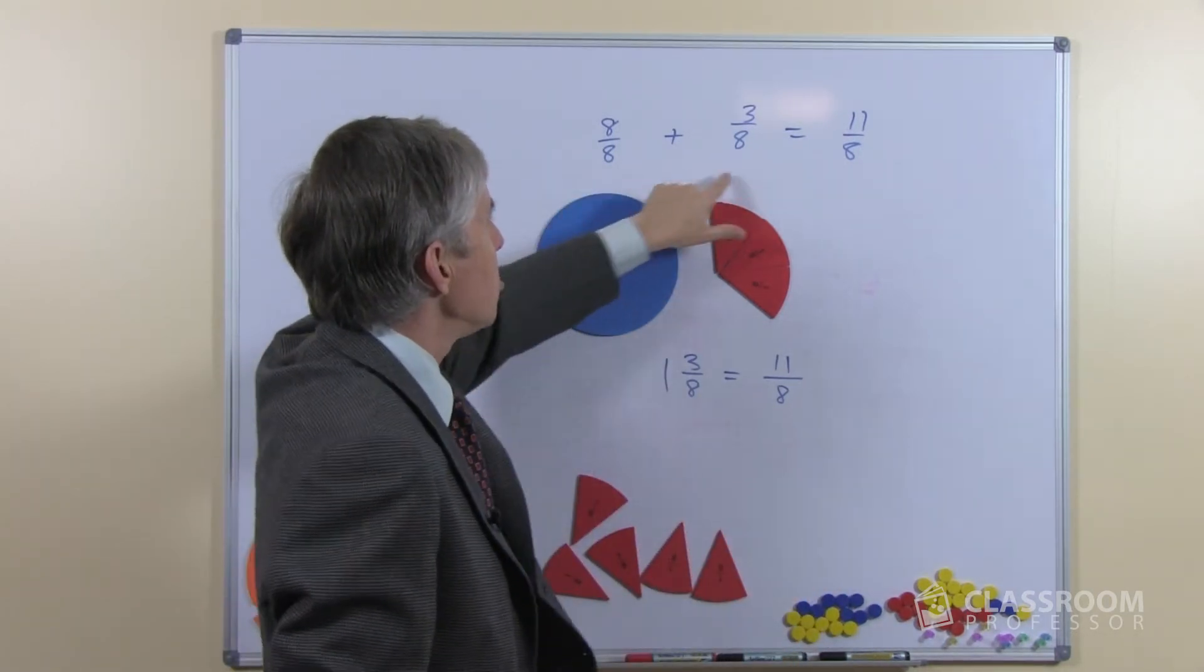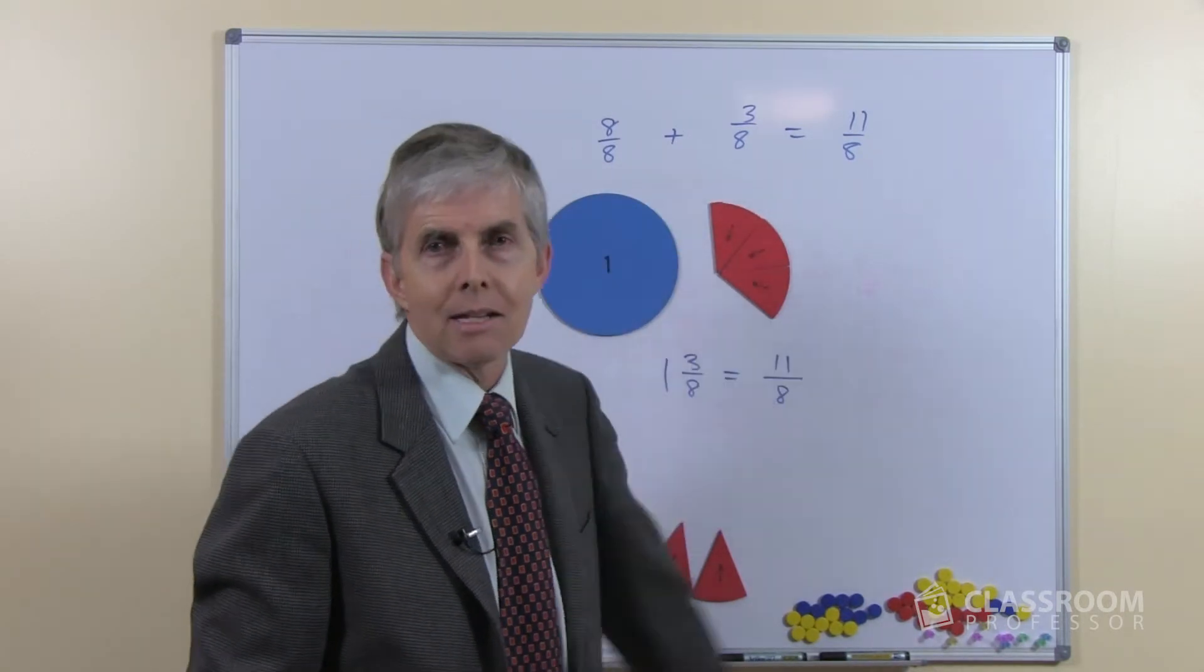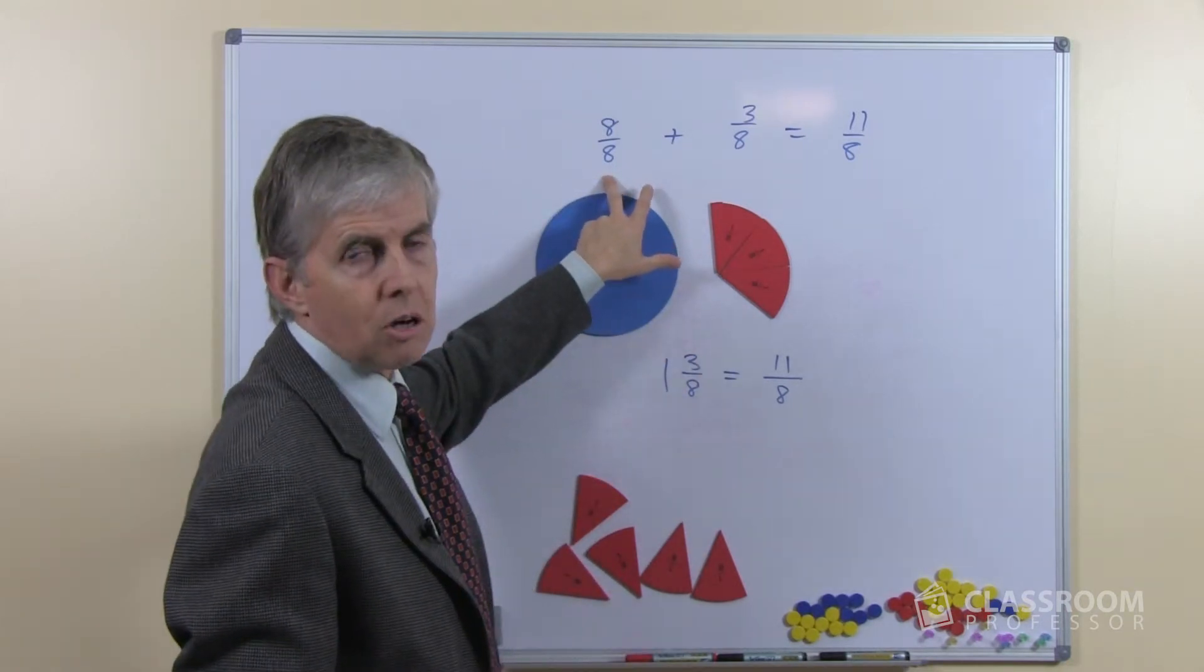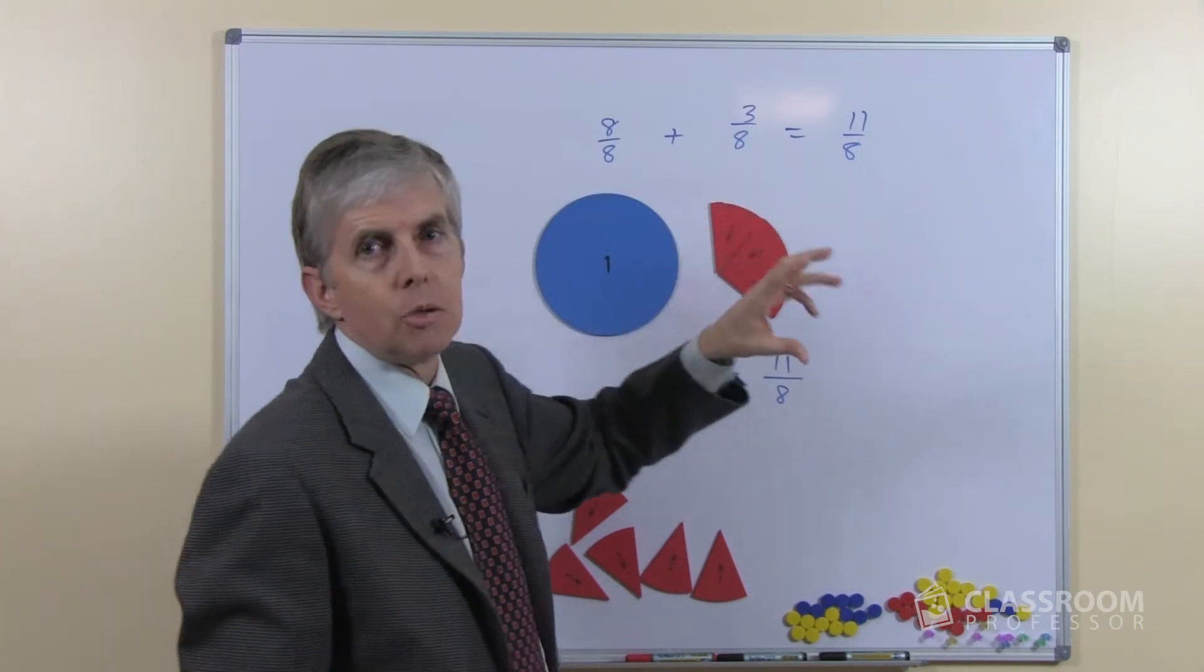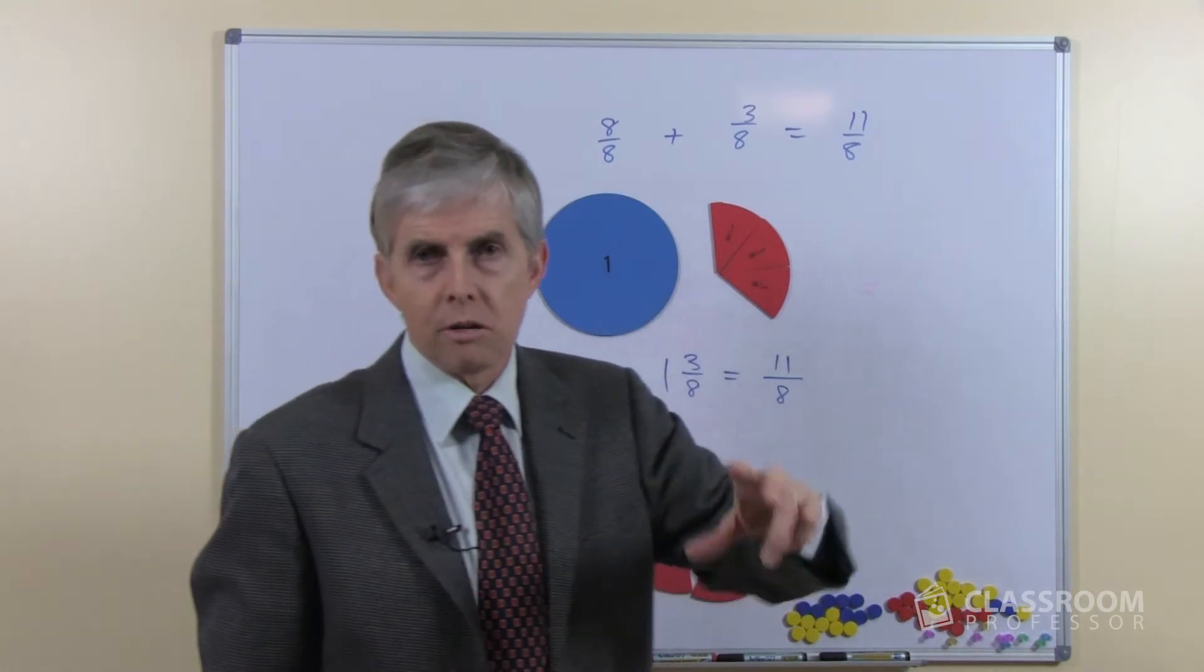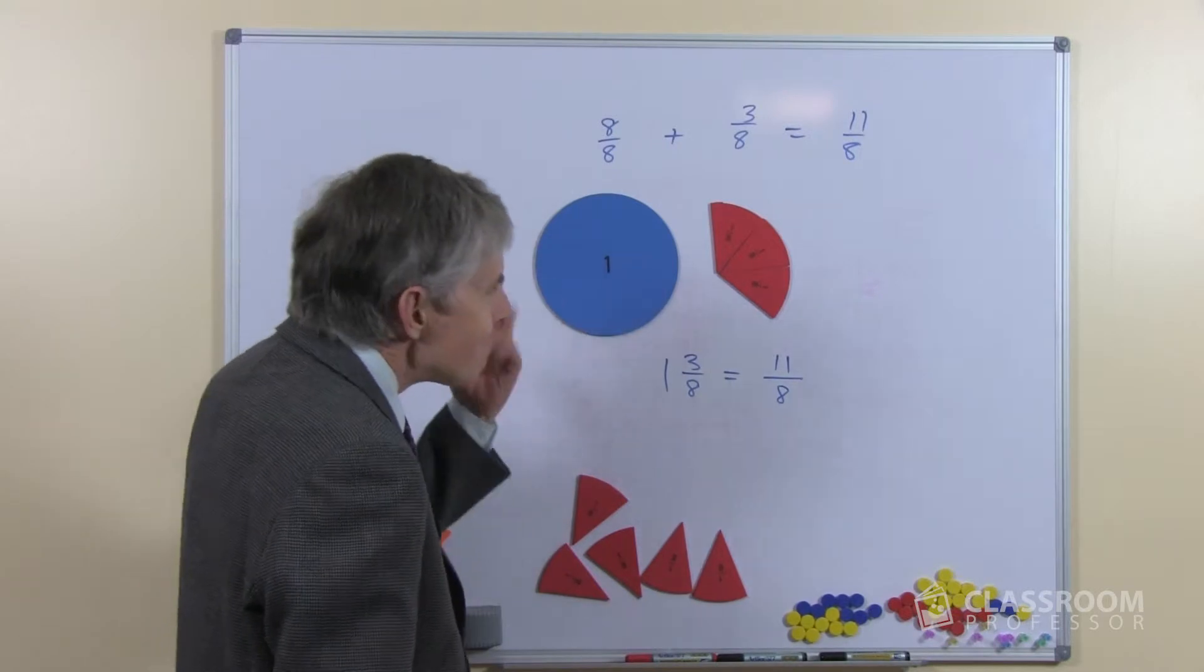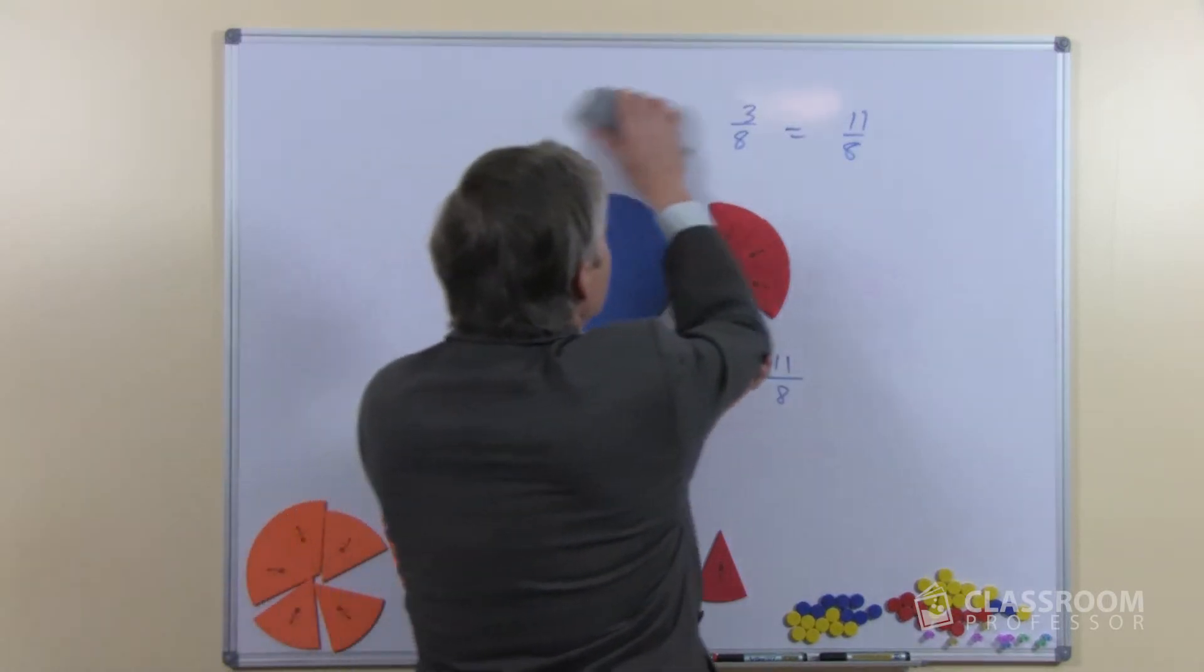The fact that we're referring to eighths in both of these terms means we can add them. If this was some other sort of fraction or just a whole, you'd have to do something else, but if they're all eighths, we can have 8 eighths and 3 eighths just as we can have 8 oranges and 3 oranges. We can add them all and we get oranges. So that basic idea, that's not terribly difficult, let's do another example.